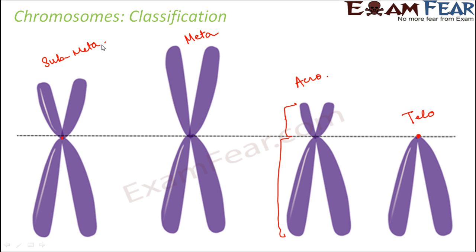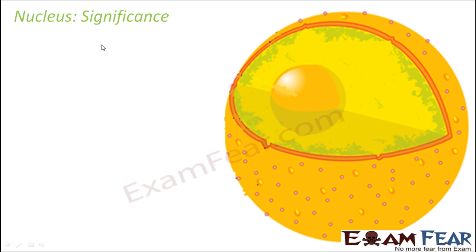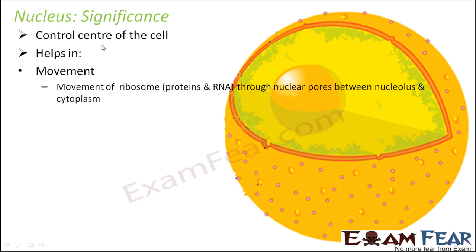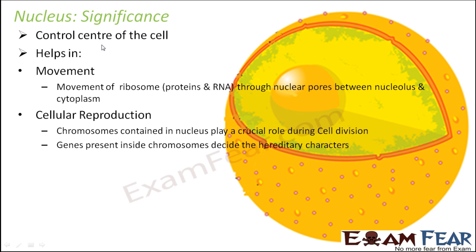Now that we've discussed the different parts of the nucleus, let us look at the significance of the nucleus. The nucleus is the control center of the cell. It helps in movement of ribosomes, proteins, and RNA through nuclear pores between the nucleolus and cytoplasm. Exchange of materials happens through nuclear pores. The nucleus is also essential for cellular reproduction, as genes inside chromosomes decide hereditary characters and chromosomes play a crucial role during cell division.